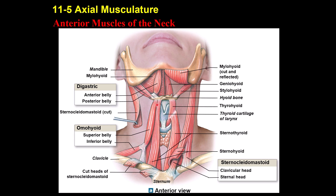For the muscles below the hyoid bone: the omohyoid connects the clavicle to the hyoid bone, and the sternohyoid connects the sternum to the hyoid bone — these are the more superficial muscles. The deeper one is the sternothyroid, going from the sternum to the hyoid. Also, the sternocleidomastoid connects the mastoid process of the temporal bone to the sternum and clavicle.